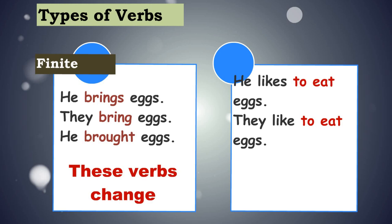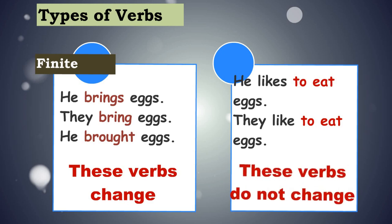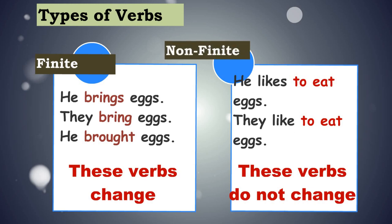Now let us see these two sentences: He likes to eat eggs. They like to eat eggs. The highlighted words to eat are not changing — what changes is likes and like. But to eat remains unchanged. Even if I say he liked to eat eggs in the past tense, the to eat remains the same. These verbs do not change irrespective of whether it is singular, plural or any tense — they are called non-finite verbs.